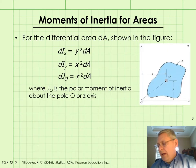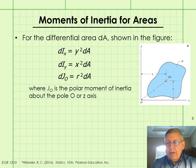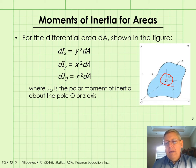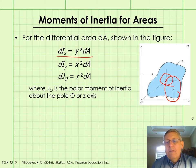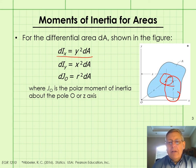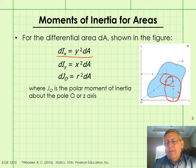The moment of inertia for a differential area about the x-axis is calculated by taking the distance of that differential area from the x-axis, which is y, squaring it, and multiplying it by the differential area. Similarly, the moment of inertia of that differential area about the y-axis is the square of the distance from the y-axis, or x, times the differential area.